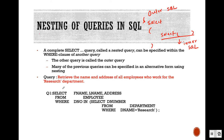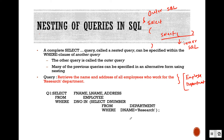Let's see one example: we want to retrieve the name and address of all employees who work for the research department. Without the nested query, we can write a query using multiple tables — employee and department — with a join condition where employee.dno equals department.dnumber and dname equals 'research'.